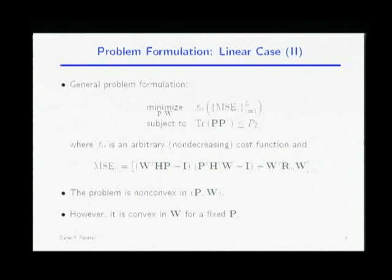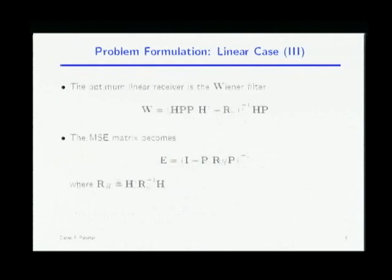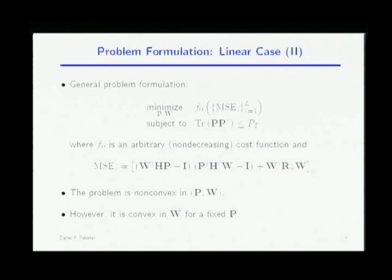If we fix P and optimize only with respect to the receiver, that's easy. Fixing P makes the MSE quadratic and convex in W, and W is unconstrained, so you take the derivative, set it to zero, and find the optimal W. What you get is the Wiener filter. The Wiener filter minimizes all the mean square errors simultaneously — there is no trade-off. So it's the optimal receiver regardless of the function we choose.